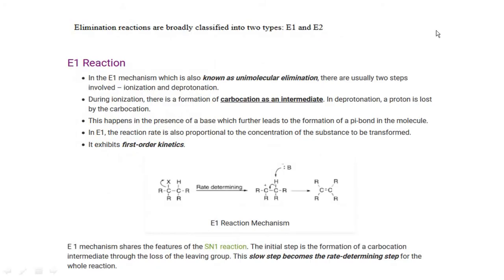Elimination reactions are broadly classified into two types: E1 and E2. E1 reaction means elimination unimolecular — the rate of reaction depends on the concentration of one reactant molecule. It is the same as the SN1 reaction. In SN1 and E1, there is formation of a carbocation. E1 is a two-step process: in the first step there is formation of a carbocation, and in the second step — deprotonation — a proton is lost by the carbocation. The slowest step is the rate-determining step, which is carbocation formation. Hence the rate depends on the concentration of only one reactant, making it first-order kinetics.